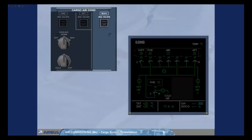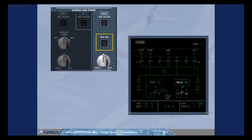There could be additional controls for the fan heater if installed. The hot air pushbutton switch, which is normally in the lights-out position, allows the ventilation controller to operate the fan heater when the ambient temperature is below the selected one, or to manually stop it. The fan heater output temperature is adjusted by the temperature selector and the corresponding indication is displayed on ECAM.